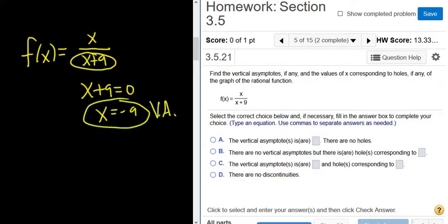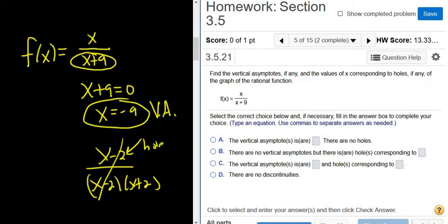And again, there are no holes because nothing cancels. If you had something like x minus 2 over (x minus 2) times (x plus 2), then yeah, that cancels, and you'd have a hole at whatever makes that 0. So the hole would be at 2, because 2 minus 2 is 0. But in this case, nothing cancels, so we go straight to the bottom, set it equal to 0, and that's our vertical asymptote.